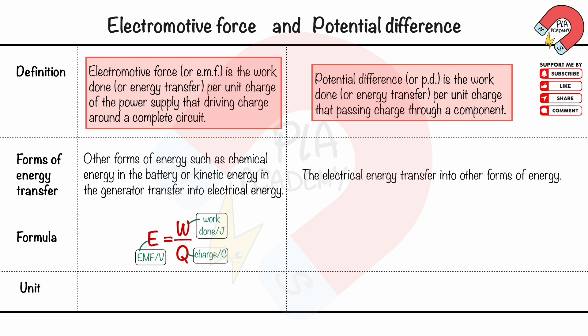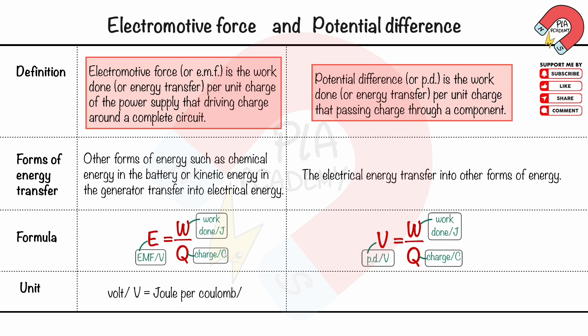The formula for the potential difference can be written as V equals W divided by Q, where V is PD in volts, W is the work done or energy transferred in joules, and Q is the charge in coulombs. Both EMF and PD are measured in volts, and one volt is equivalent to one joule per coulomb.